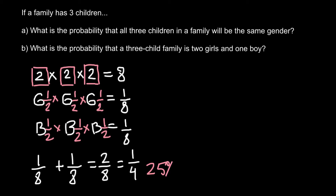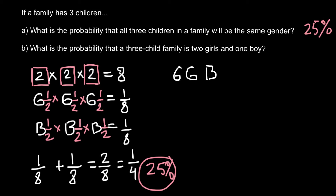Now for the second question: what is the probability that a three-child family has two girls and one boy? Let's find how many combinations give us two girls and one boy. The first variant is girl, girl, boy. The second variant is girl, boy, girl. The third variant is boy, girl, girl. So out of a total of eight combinations, three give us two girls and one boy.